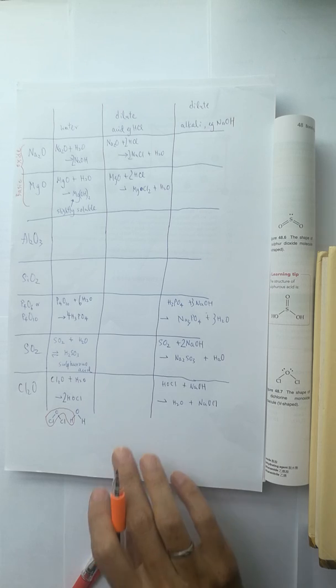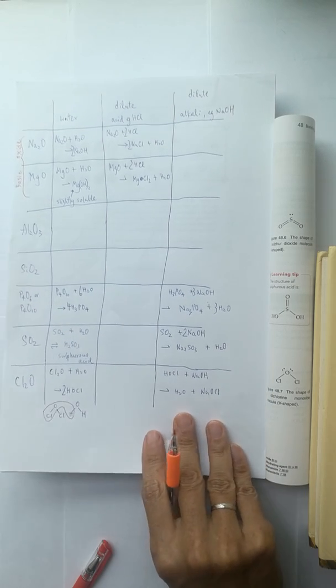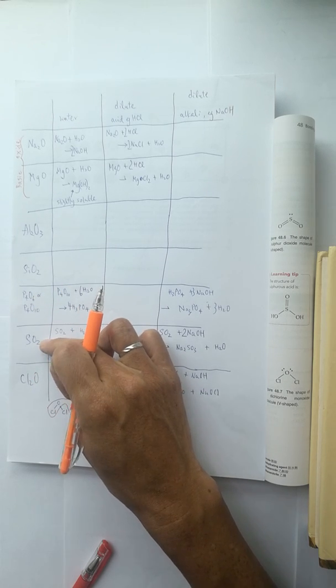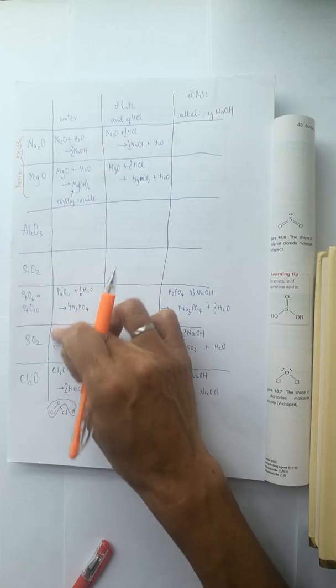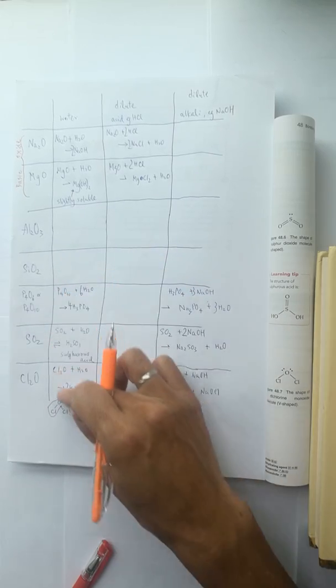Okay, now we look at the SiO2. From Cl2O, SO2, P4O10, they are dissolved with water forming the acid.